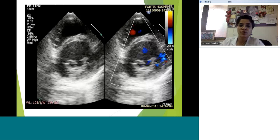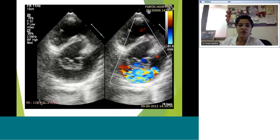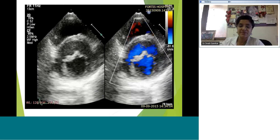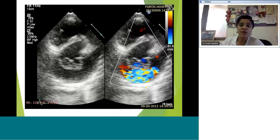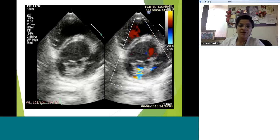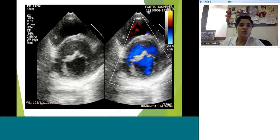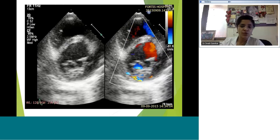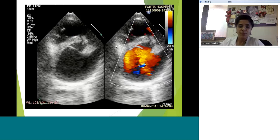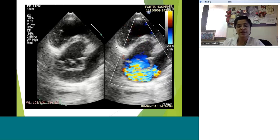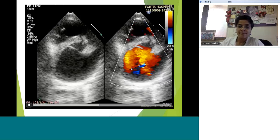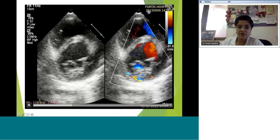For color flow, remember to assess at around 60 to 70 centimeters per second Nyquist limit. If you go above and set the scale at 100, you run the risk of losing the yellow and under-quantitating your mitral regurgitation. This is very important, especially when eyeballing it — make sure your Nyquist is set right.